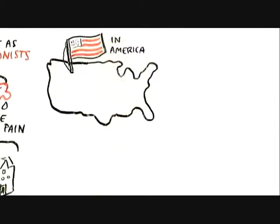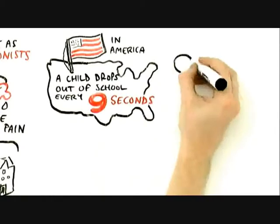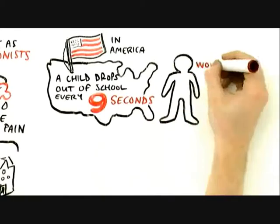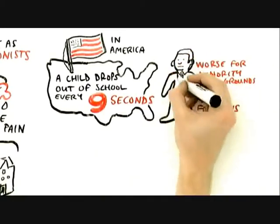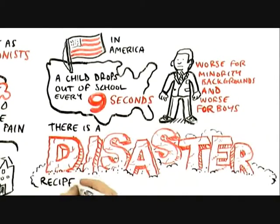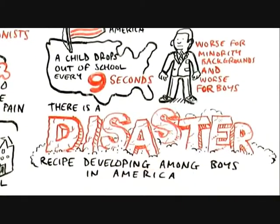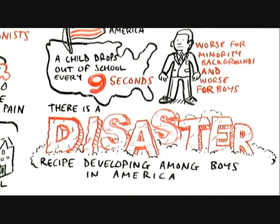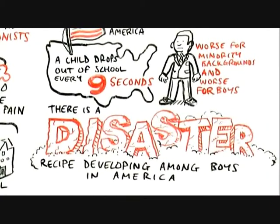In America, a child drops out of school every nine seconds. This is worse for kids from a minority background, and it's worse for boys than girls. There's actually a disaster recipe developing among boys in America, literally dropping out of high school, college, and it's not simply poor performance.